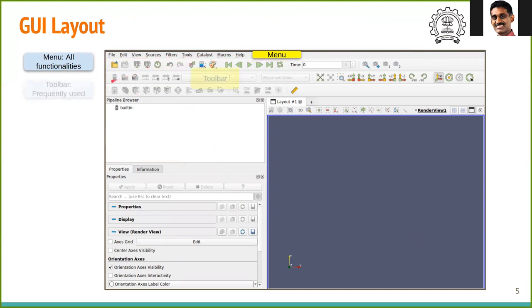Then we have the toolbar. The toolbar contains several widgets for commonly used functionalities. Next, we have two panels here. The source data and its manipulation are done in these panels.